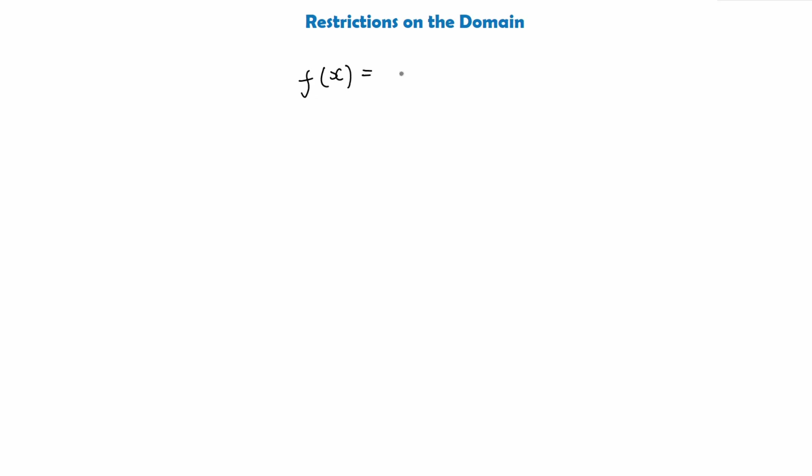The domain is the set of all possible inputs to a function, so it must be possible to evaluate the function for any element of the domain — meaning for any element in the domain, the function must give something in the range. This is not necessarily always the case, however. For example, we are not allowed to divide by 0, so for functions involving fractions, the domain must exclude numbers which would give the denominator the value 0.